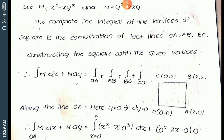As per the vertices: O is (0,0) — the origin, A is (2,0), B is (2,2), C is (0,2). The complete line integral over the square is the combination of the four lines OA, AB, BC, and CO.